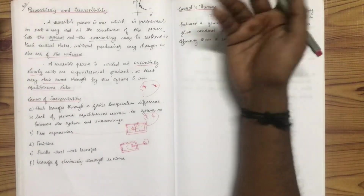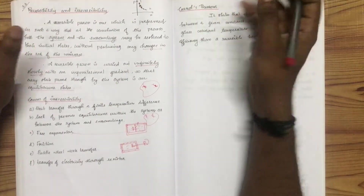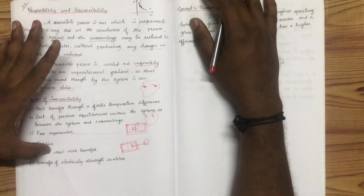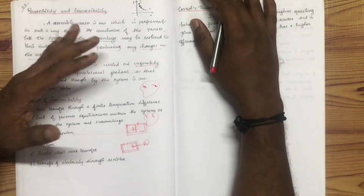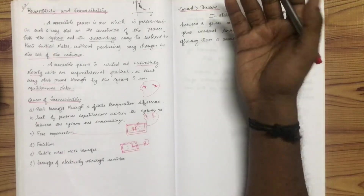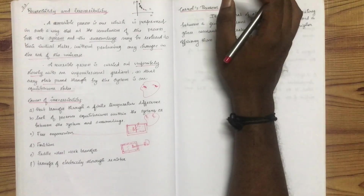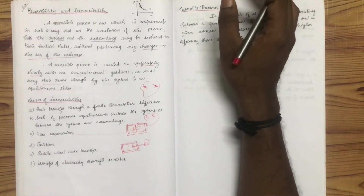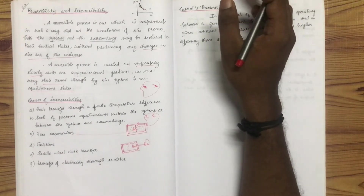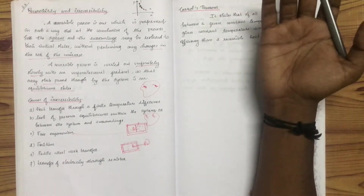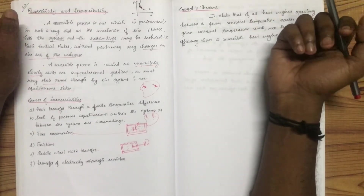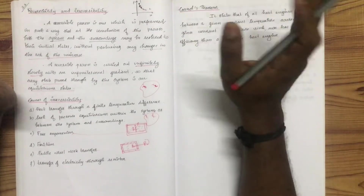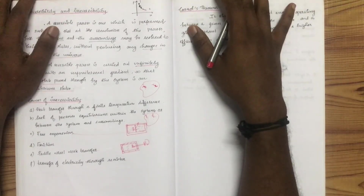The irreversibility may happen. The transfer of electricity through a resistor will cause heat generation, and that will disturb the equilibrium of the body.